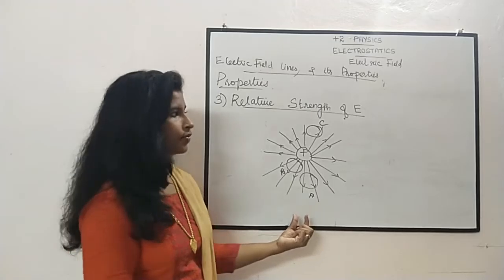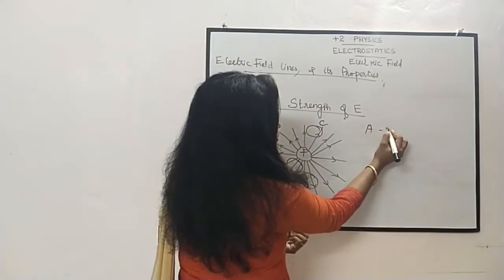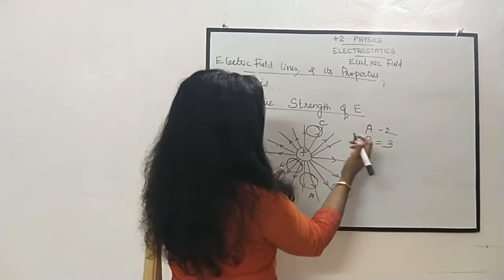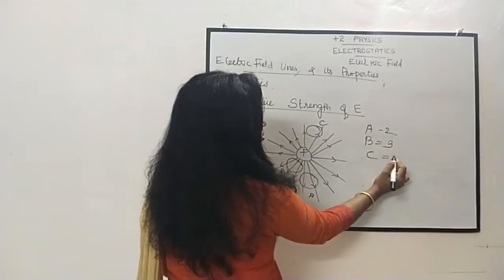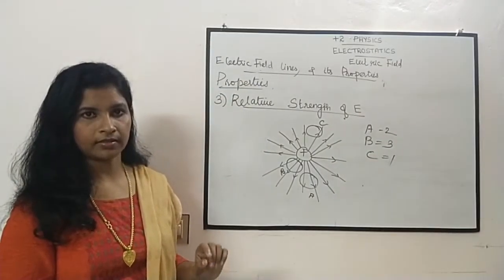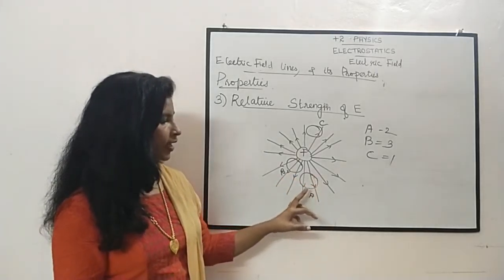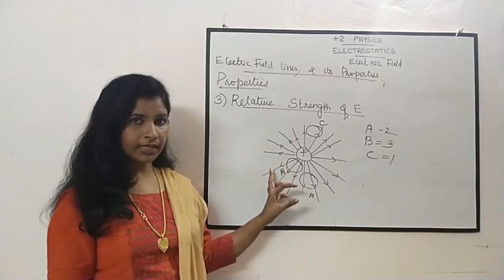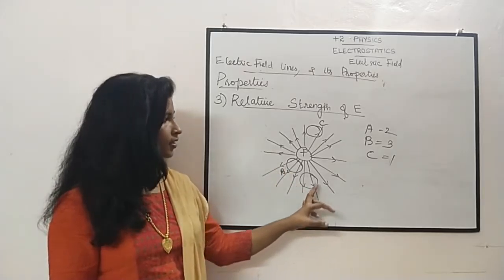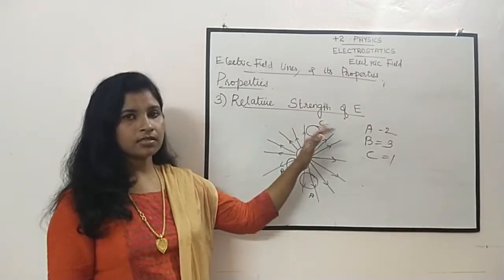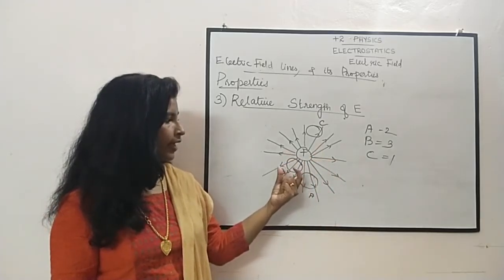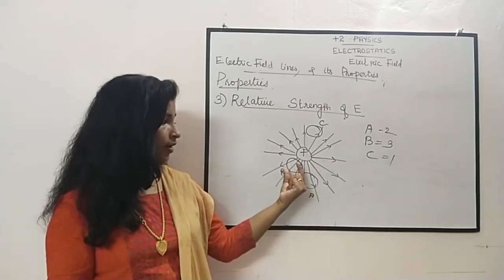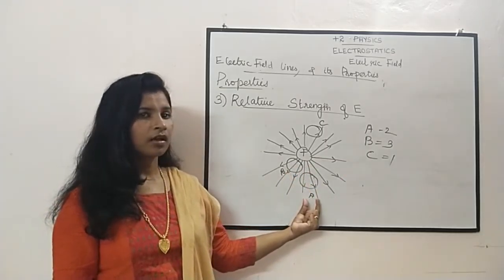Now we are going to discuss the properties of the electric field lines — these are very, very important. The first property is about the starting and termination of the electric field line. Electric field lines always start from the positive charge.